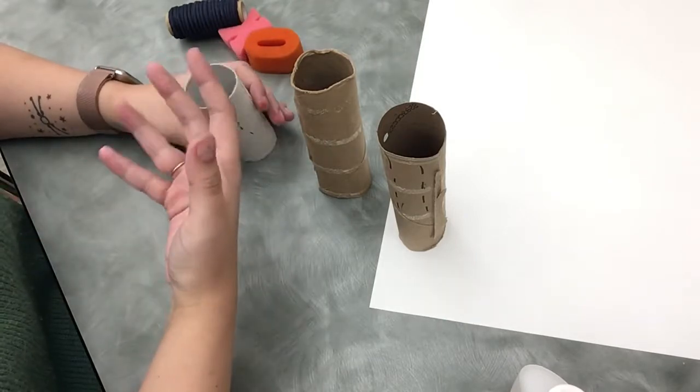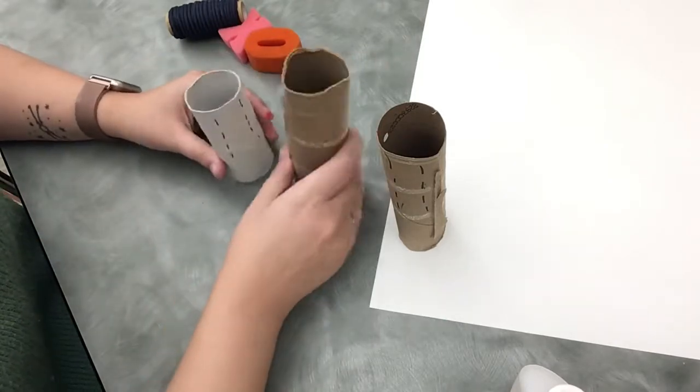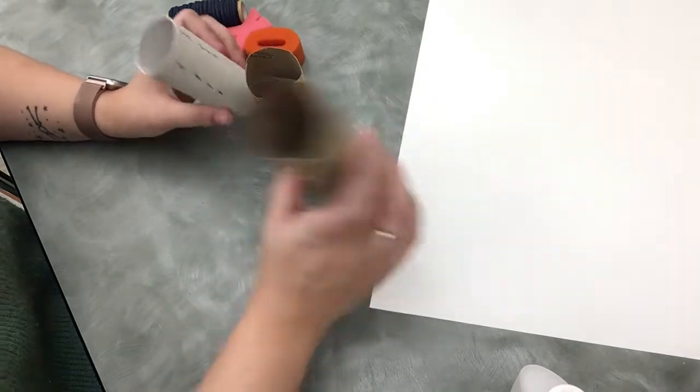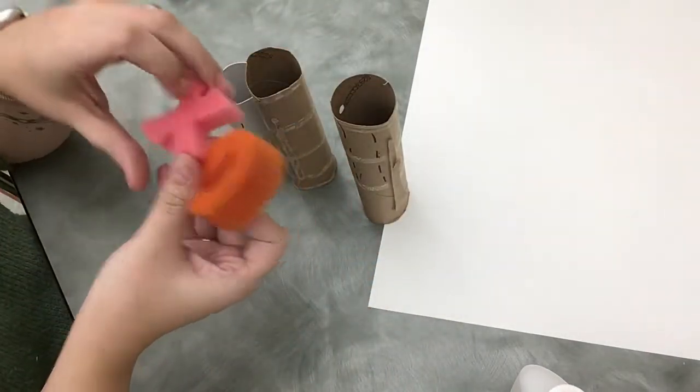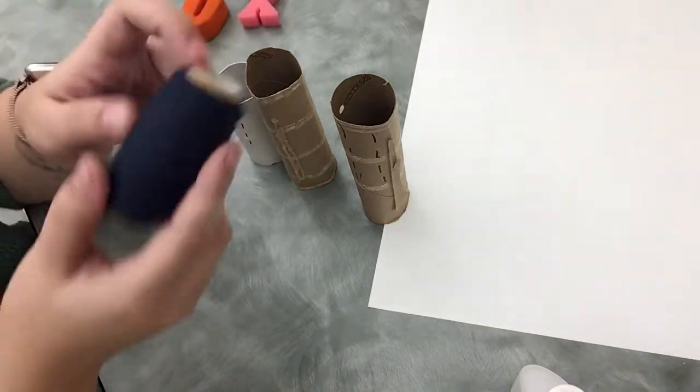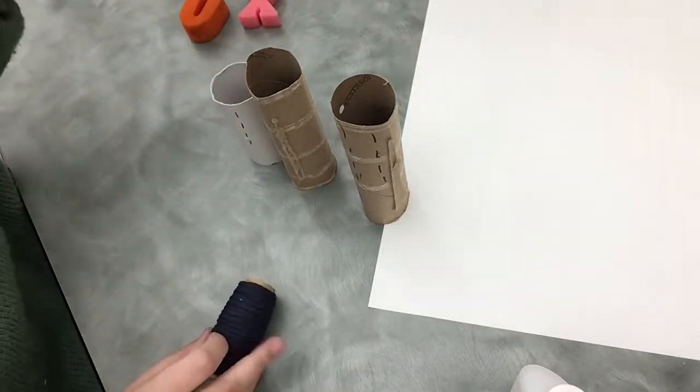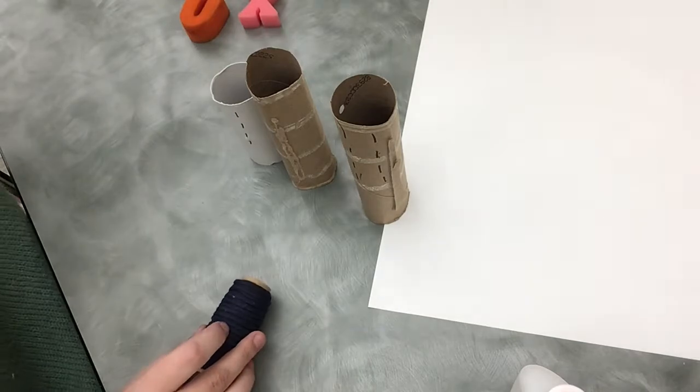We will have supplies here while they last. So today we are gonna make three different kind of rollers out of toilet paper tubes. We are gonna make one that has this XO for Valentine's Day. We're gonna do one with string and we're gonna do one with bubble wrap.